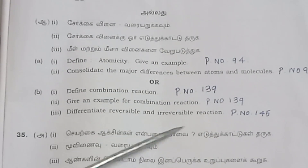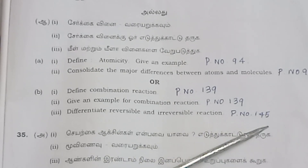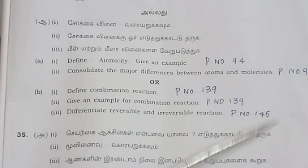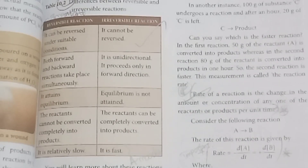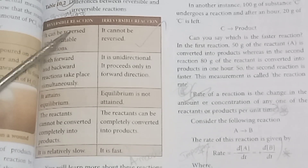Question 34 part 2: Differentiate reversible and irreversible reactions. Refer to page number 145. A reversible reaction proceeds in both forward and reverse directions.